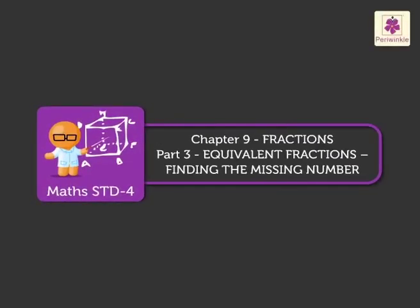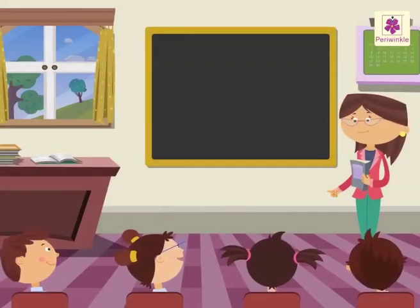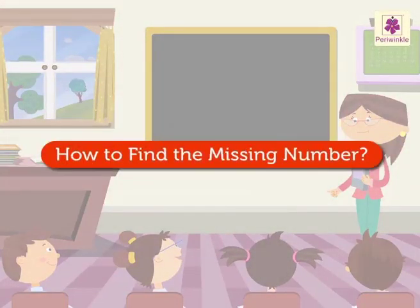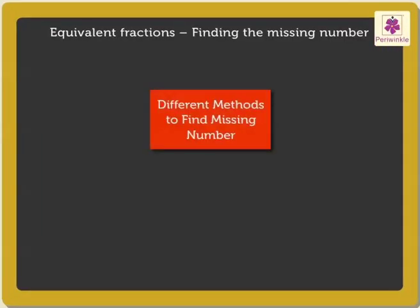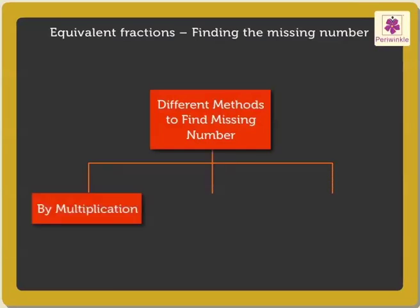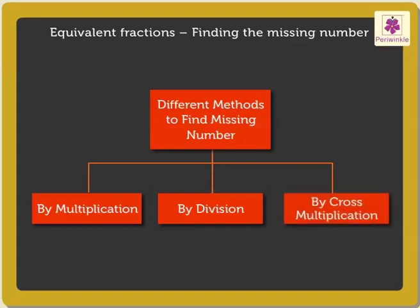Equivalent Fractions: Finding the Missing Number. Today, let us learn how to find the missing number in a pair of equivalent fractions. There are different methods to obtain the missing number. They are: 1) by multiplication, 2) by division, and 3) by cross-multiplication.